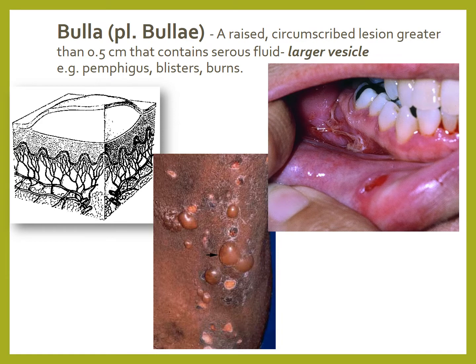A bulla (plural: bullae) is a raised circumscribed lesion greater than 0.5 cm that contains serous fluid — essentially a larger vesicle. Examples include pemphigus, blisters, or burns. In the oral cavity, bullae do not last long because they are thin-walled and rupture, leaving tissue tags or an ulcerated surface, as seen in the vestibular mucosa in the picture.